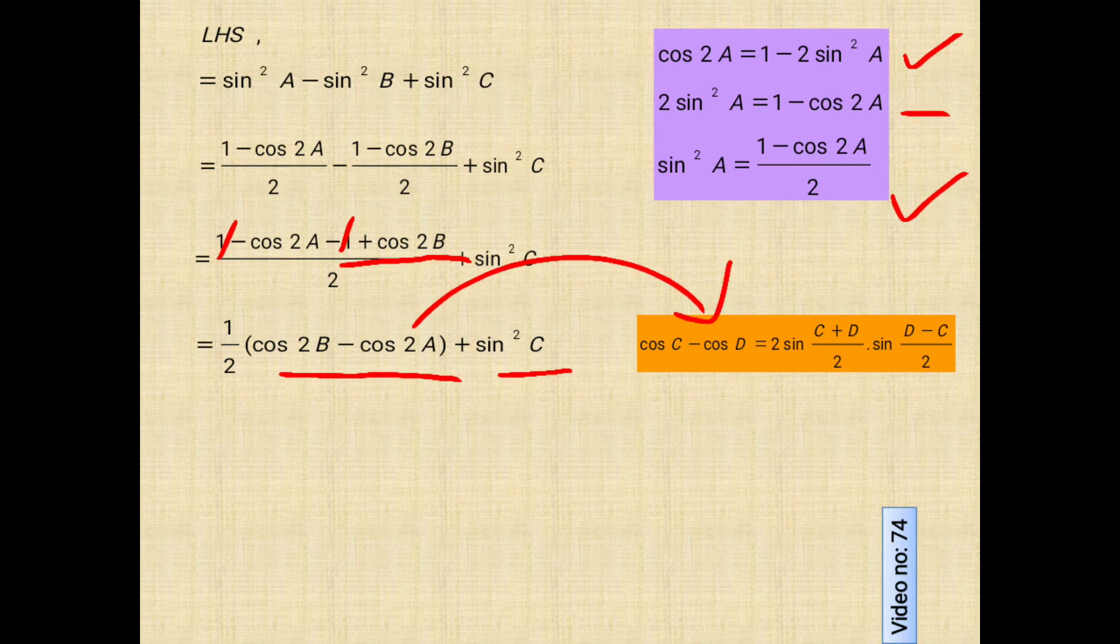Which equals 2 sine C plus D by 2 into sine D minus C by 2. Where if we compare with the given step, we will use 2B in place of C and 2A in place of D.